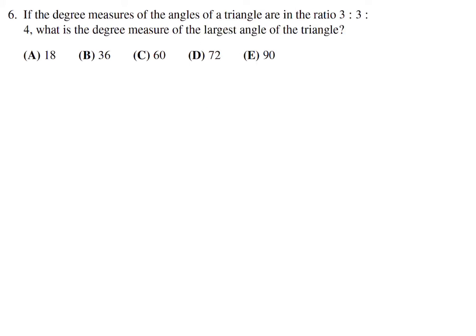If the degree measures of the angles of a triangle are in the ratio of 3, 3, 4, what is the degree measure of the largest angle of the triangle? We've got 3x, 3x, and 4x. And those are the degree measures. So when you add them all up, 3x plus 3x plus 4x, that has to equal 180.